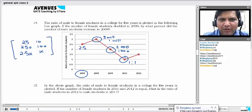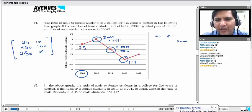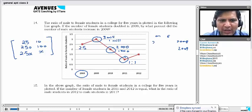If the ratio of male to female students in a college for 5 years is plotted, if the number of female students doubled in 2009. So let me say male, female, 2008 and 2009. Now let me assume in 2008, the ratio is 2.5. So let me assume it to be 250 and 100. It is given to us female students doubled in 2009 which means this is going to become 200. The ratio is of 3, which means this is going to be 600.